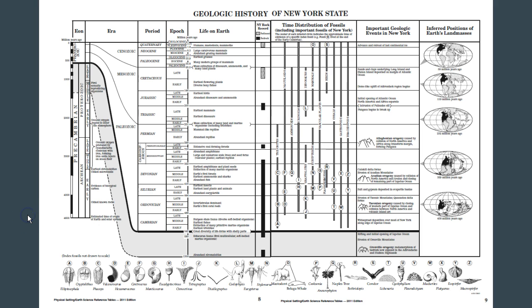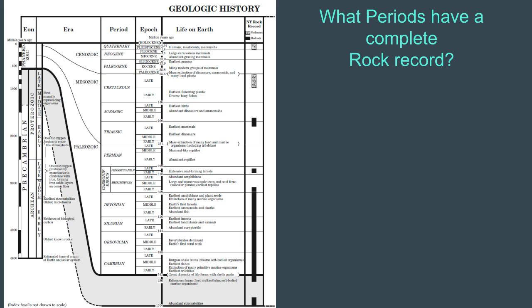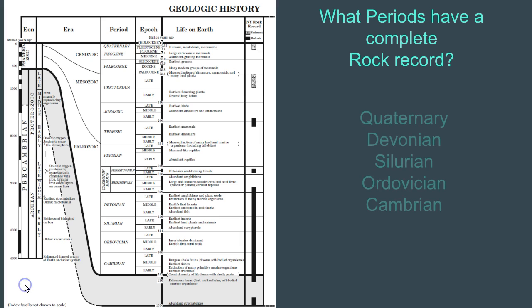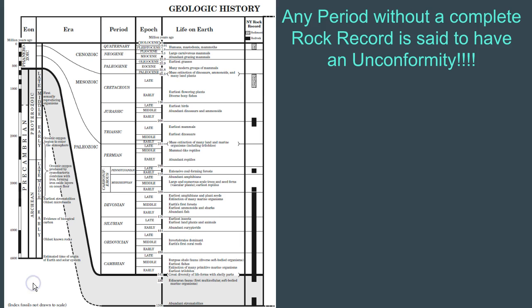Probably the least exciting out of all of them is the New York rock record. You can see, just based upon the bar graphs alone, within each time period you have time periods that might be incomplete - they're missing rock records. It was weathered and eroded away. And then there are other time periods where it's completely fully intact. You can see that this is sediment and that's bedrock, and they make a distinction based upon that as well. A question could be: what periods have a complete rock record? Whichever one is full for the whole period, then you know that it has a complete rock record. Any period without a complete rock record is said to have an unconformity.